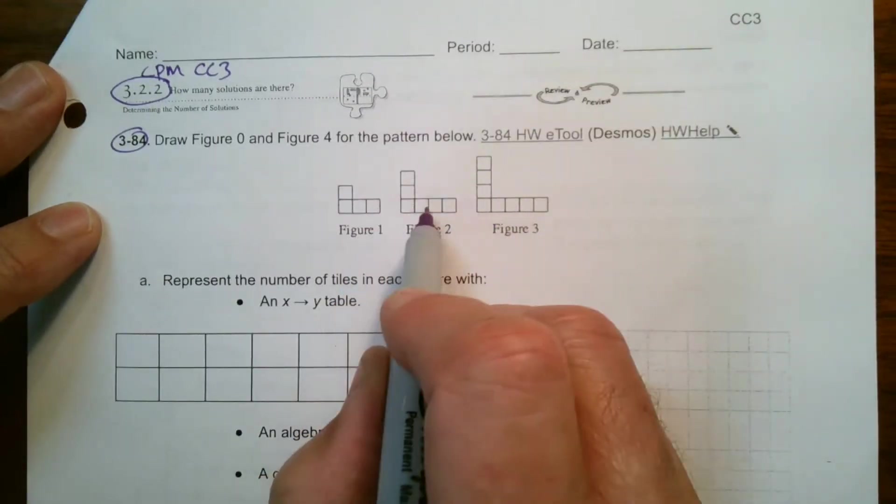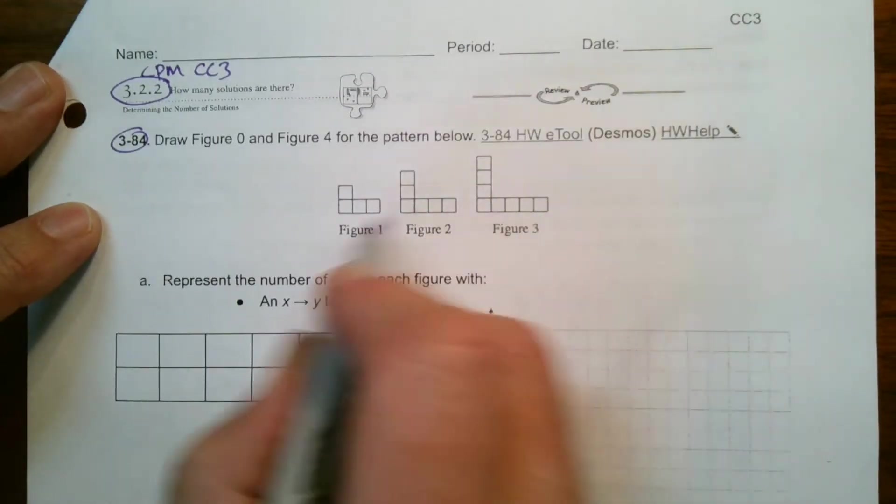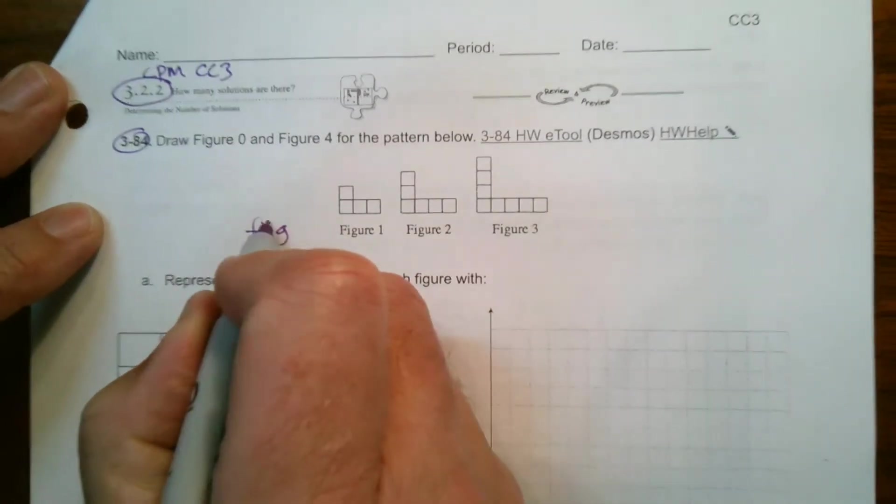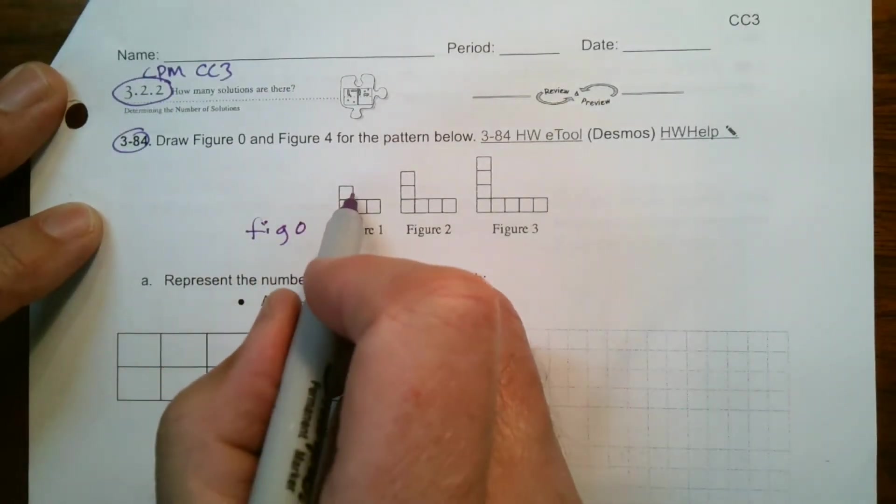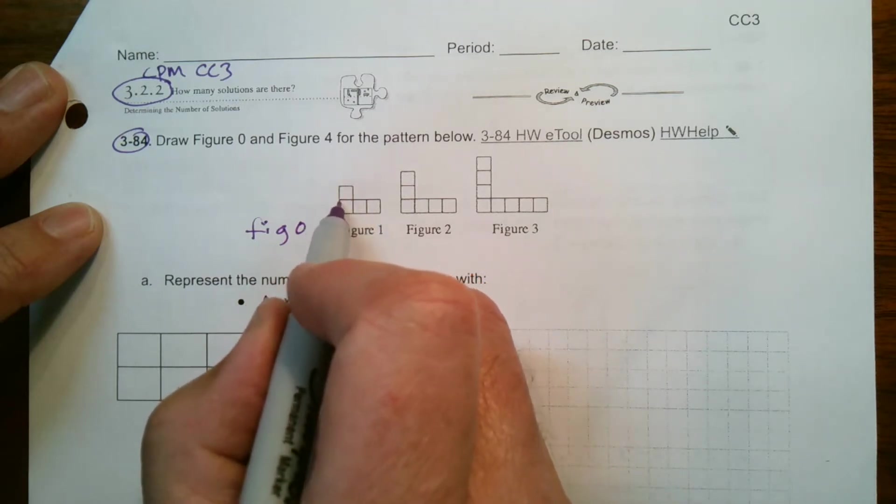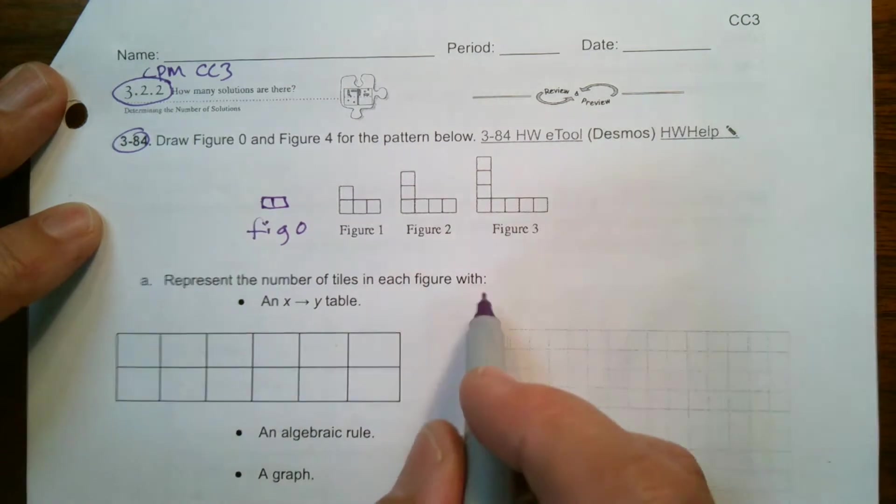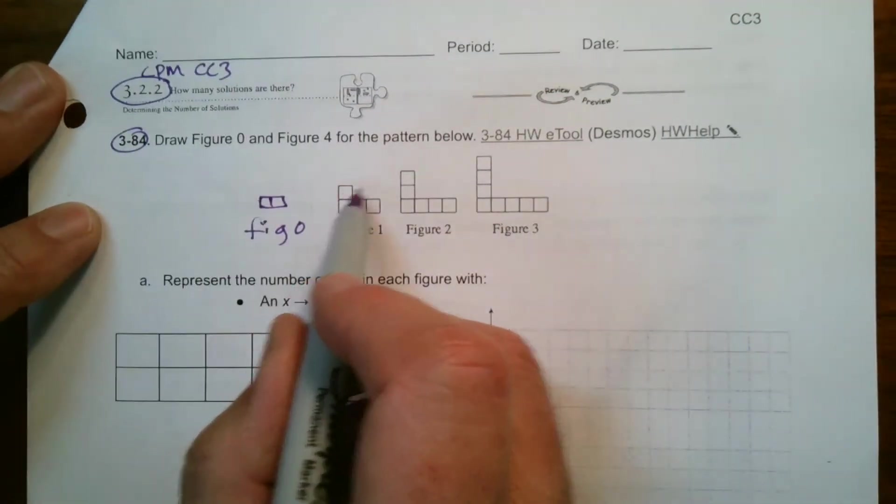And it's also then getting longer by one. So if I'm going to back this up to figure zero, what would figure zero look like? Well it wouldn't have one on top and it would only have two blocks on its side. So figure zero is going to look like that right because it was growing by one on top and growing by one out.